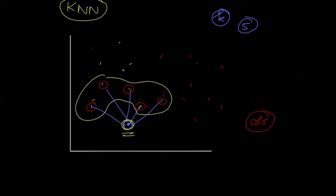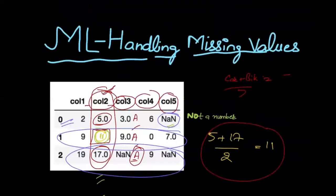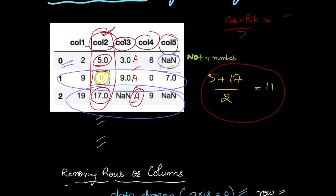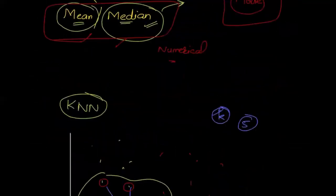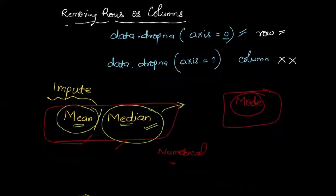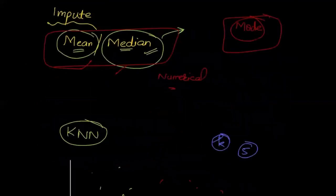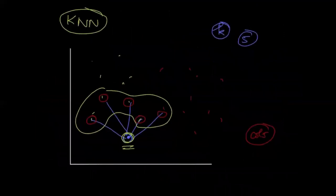So this is how you normally handle missing data. Whether you have a null or empty value, you can remove rows and columns, you can impute the value with mean, median, or mode, or you can use a KNN model to find the nearest values. In the coming lectures I will show you the Python implementation in depth of how this actually works.